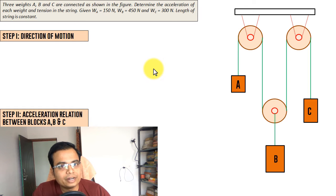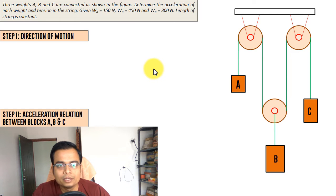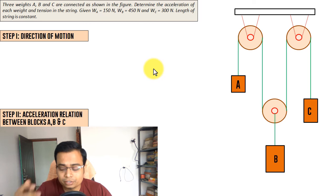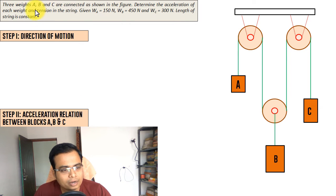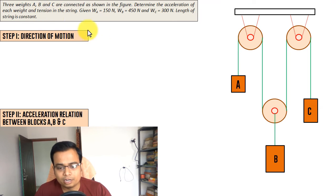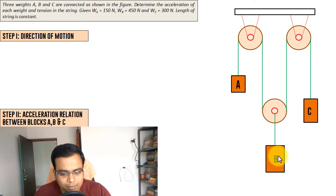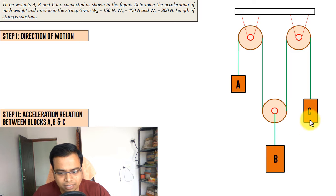Hey guys, this is Antwita Manas and it's going to be yet another session in this lecture series on engineering mechanics. Today we're going to be taking up one more problem on dynamics. There are essentially three blocks A, B, and C. Their weights have been given to us: that's 150, 450, and 300 newtons.